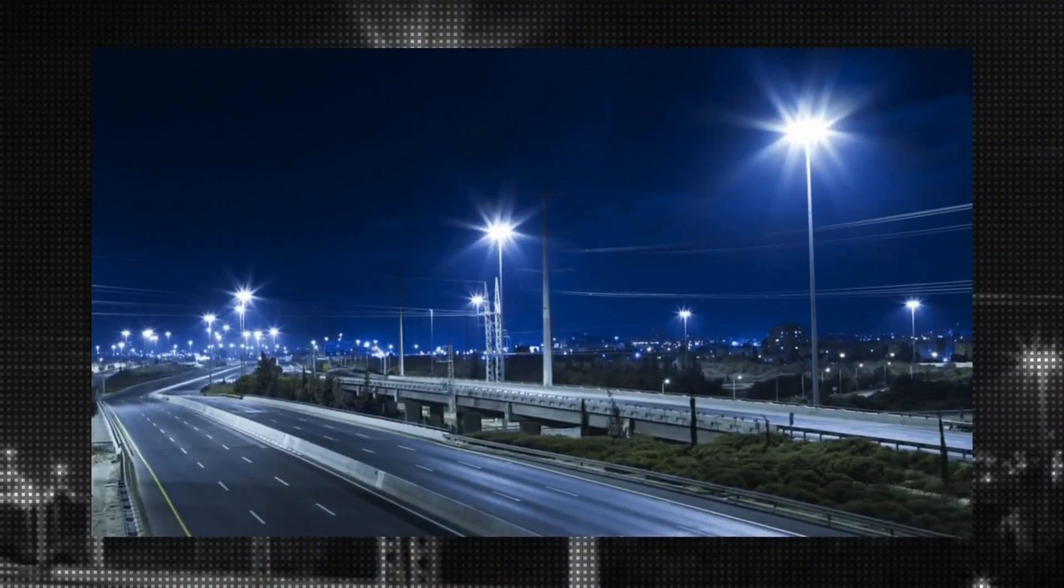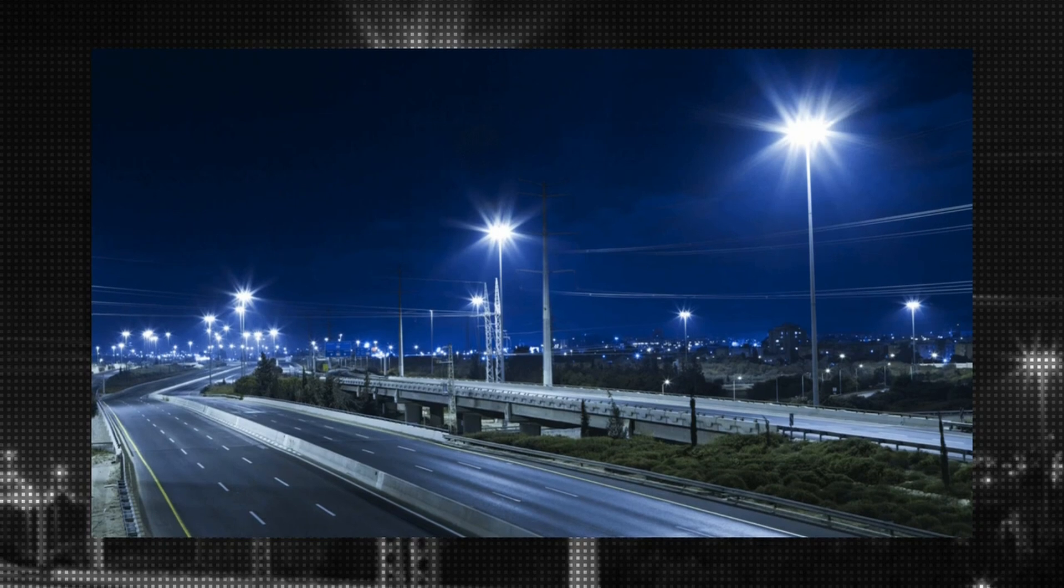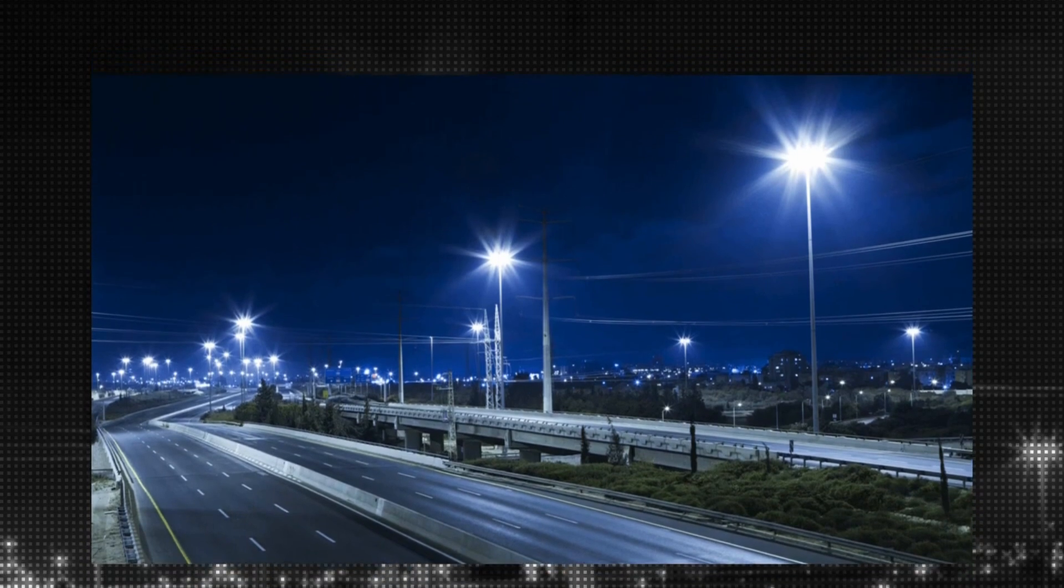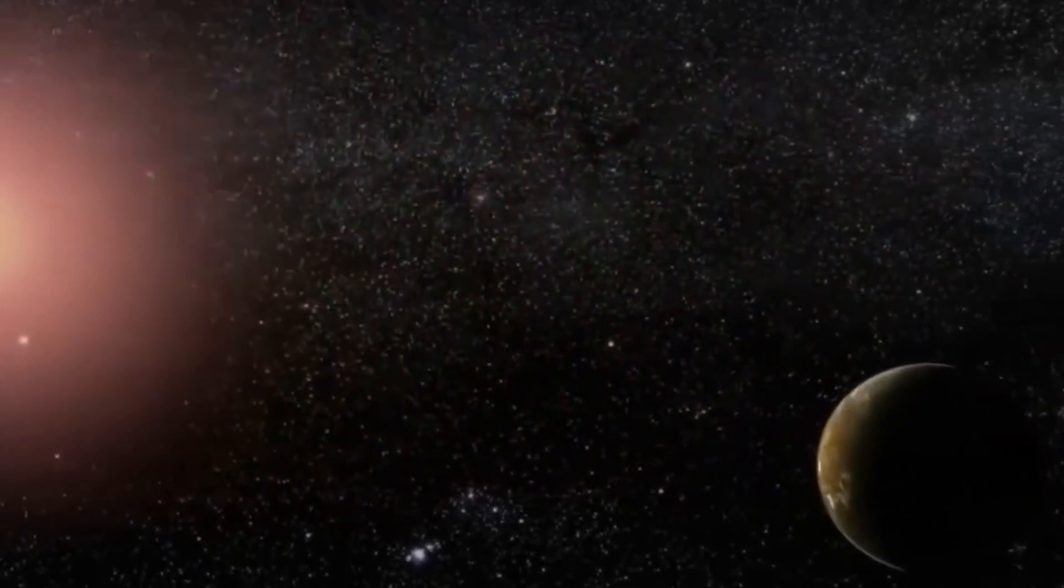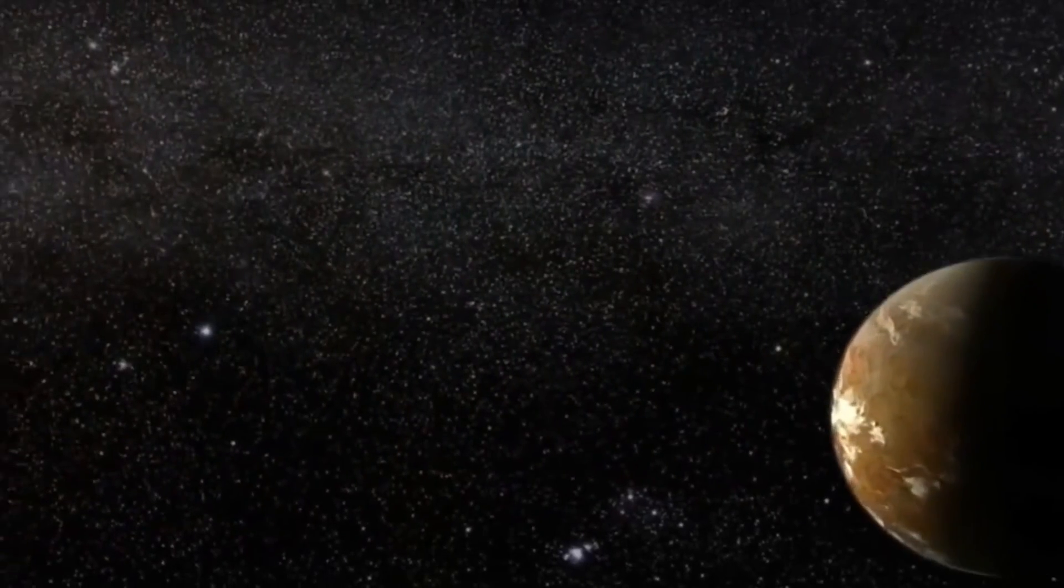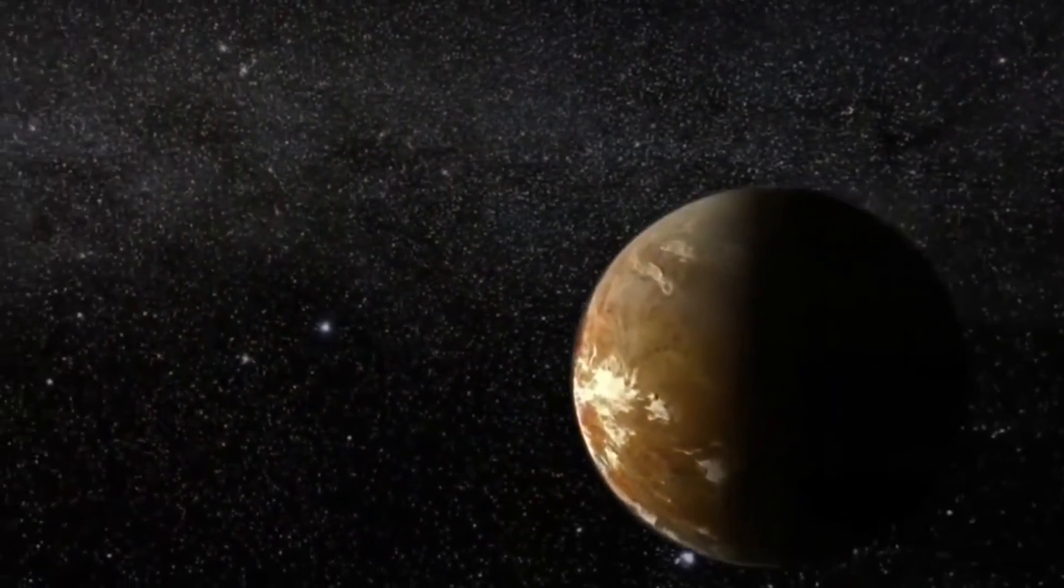However, if it's illuminated artificially, like by streetlights or city lights, the light curve will be regular and predictable, similar to that of an LED light source. We can tell whether Proxima b has natural or artificial illumination by analyzing the curves.